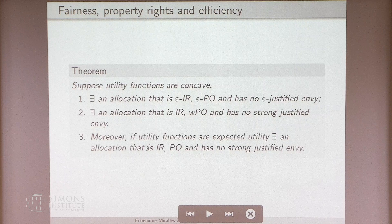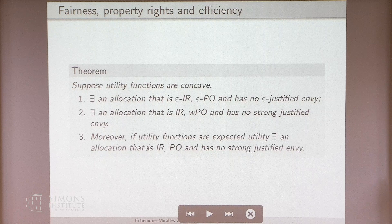Question: could you walk me through how this applies to the earlier non-existence example? That was an example of non-existence of Walrasian equilibrium. So the allocation I showed you would satisfy these properties in that example — in particular, it would pick out the (1/2, 1/2, 0, 1) allocation.